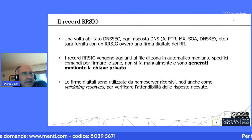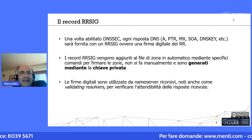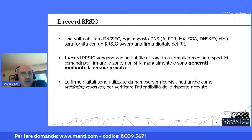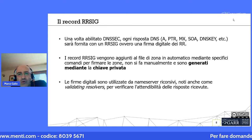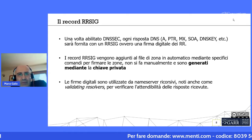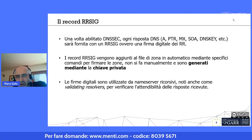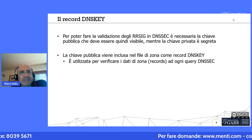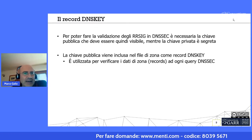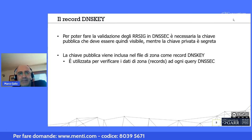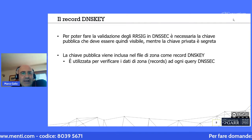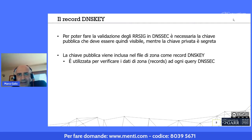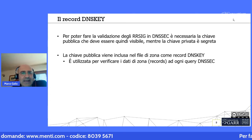L'RRSIG è il record usato per associare ad ogni resource record del file di zona una firma digitale; questi record vengono generati automaticamente usando specifici comandi, e ogni volta che si aggiunge un nuovo record vengono associate le firme digitali. La firma digitale deve essere convalidata in DNSSEC utilizzando la chiave pubblica associata al file di zona, per cui viene usato il DNSKEY, con cui si pubblica la parte di chiave pubblica relativa a un nome a dominio.